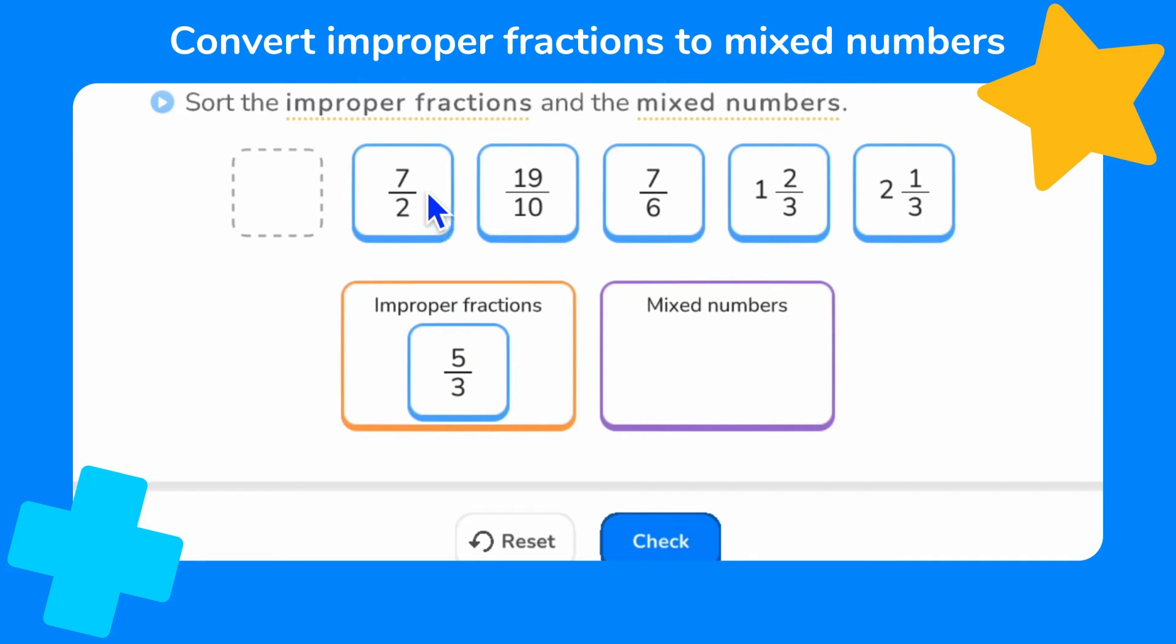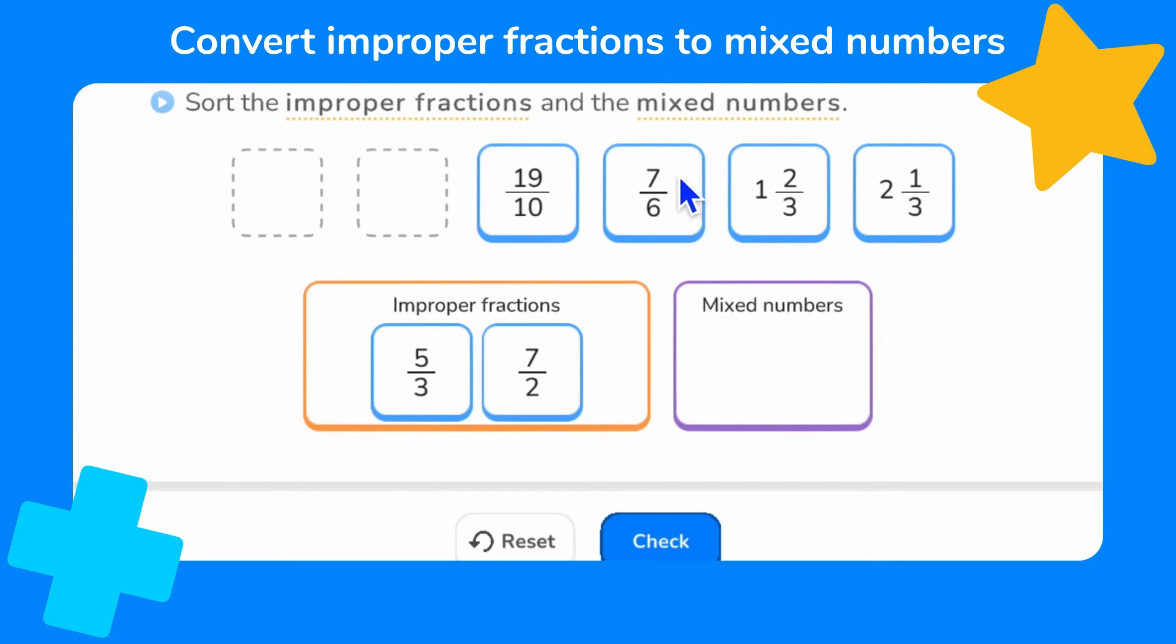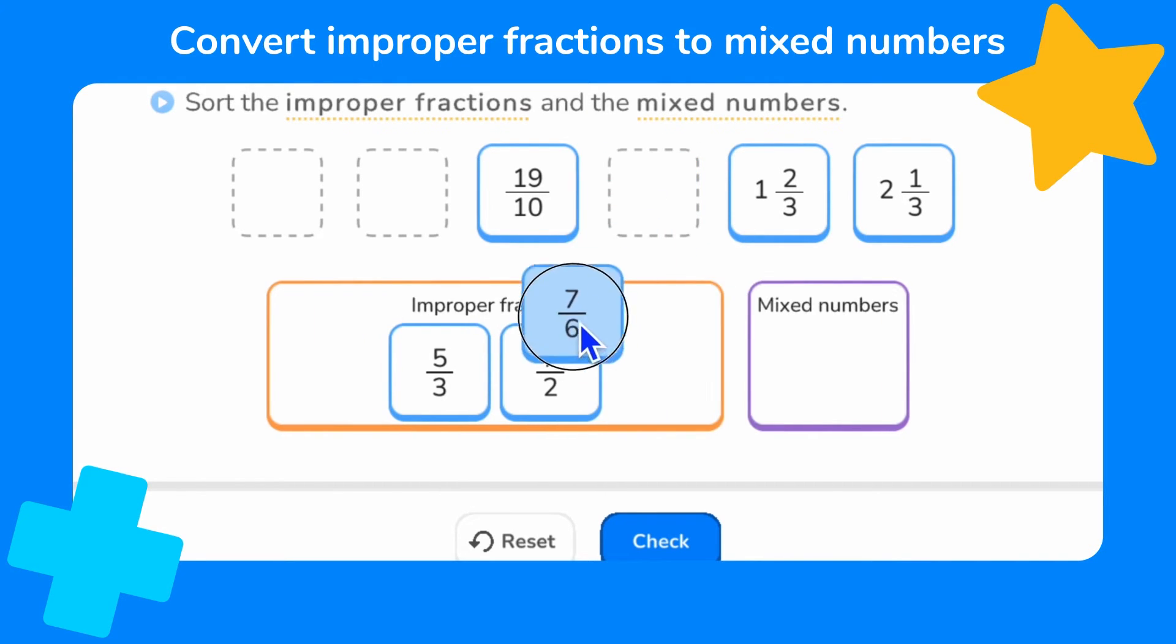7 over 2 or 7 halves is also an improper fraction. 7 sixths, the numerator is greater than the denominator, so it's also an improper fraction.